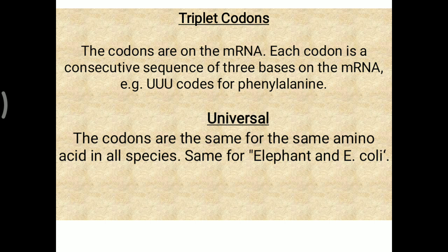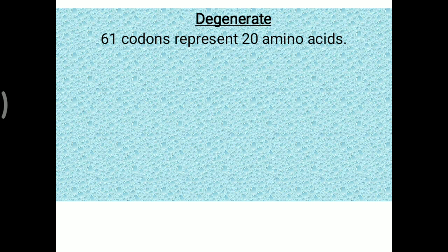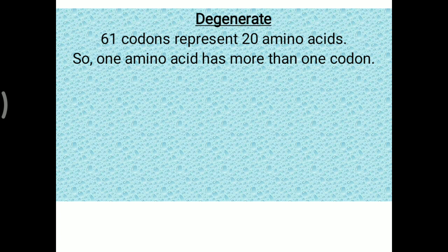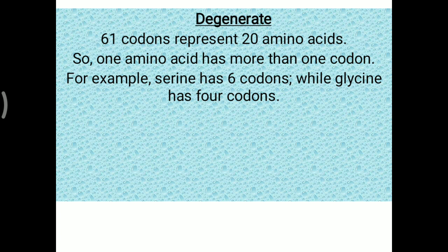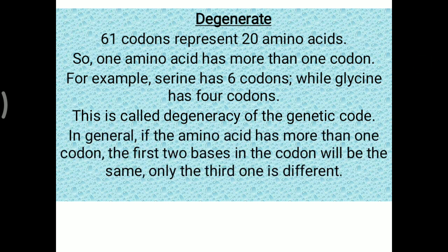The same codon is used in elephants, E. coli, and humans alike. The genetic code has been highly preserved during evolution, which is why it is called universal. Regarding degeneracy: 61 codons represent 20 amino acids, meaning one amino acid can have more than one codon. For example, serine has six codons while glycine has four codons — this is called degeneracy of the genetic codon.